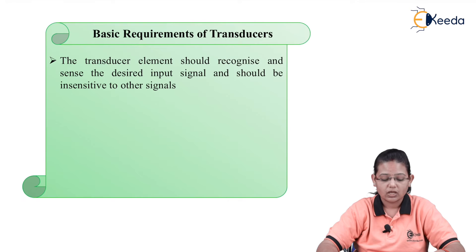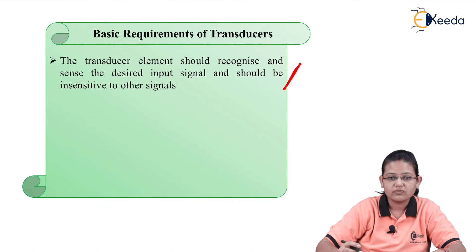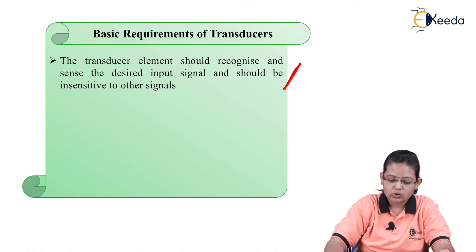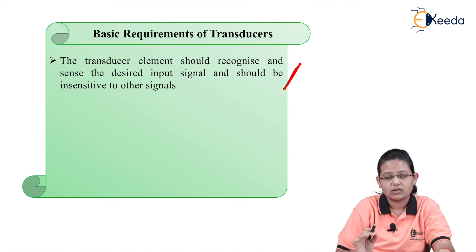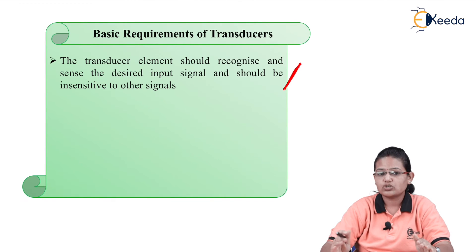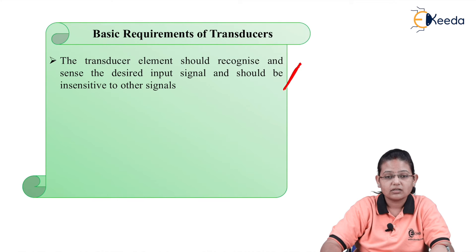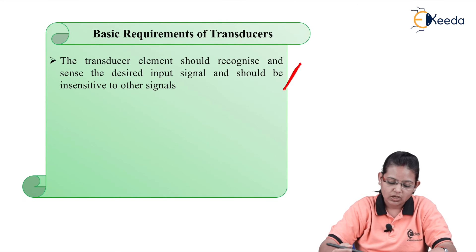The first requirement is that the transducer element should recognize and sense the desired input signal and should be insensitive to other signals. For example, if I choose a thermocouple, which is a temperature transducer, it should sense only heat flow or temperature and should not be affected by other signals like pressure or flow. The transducer should not recognize other signals.